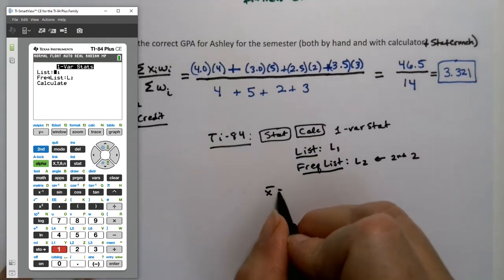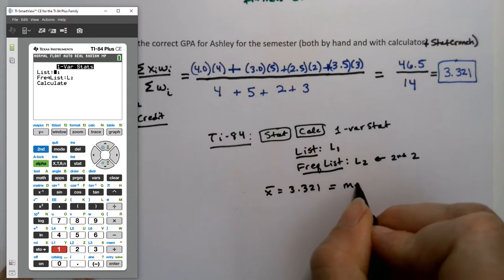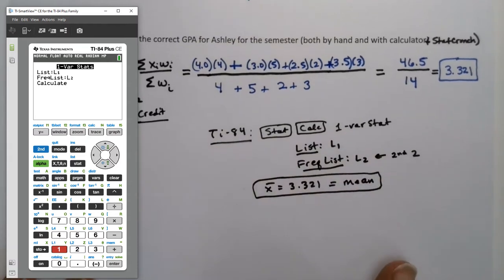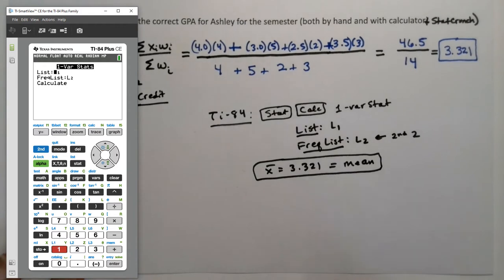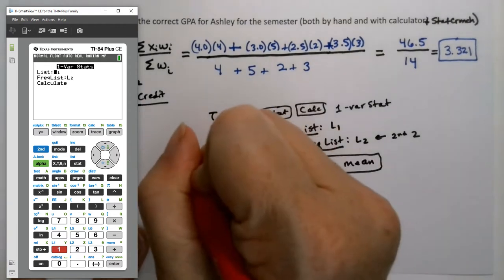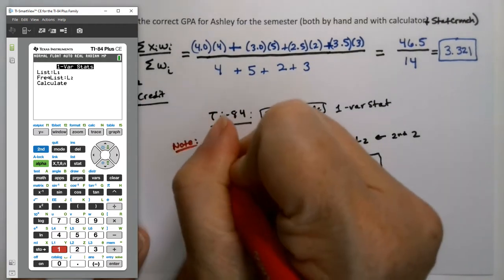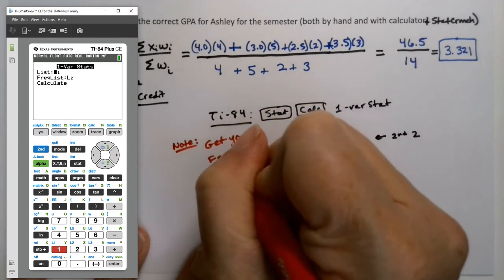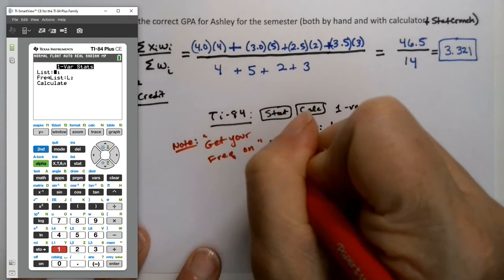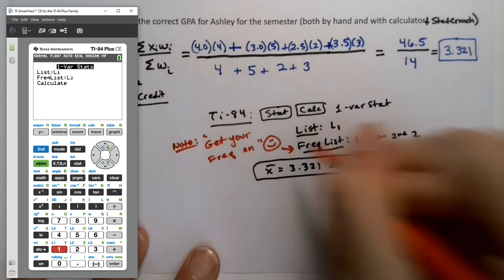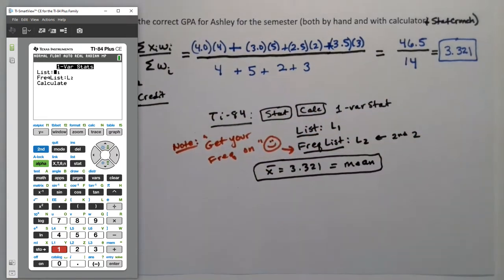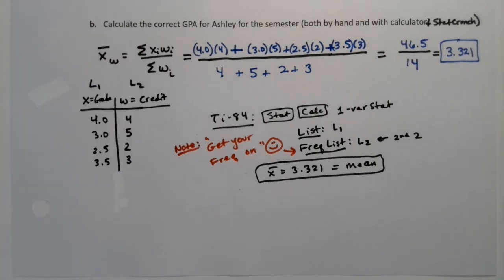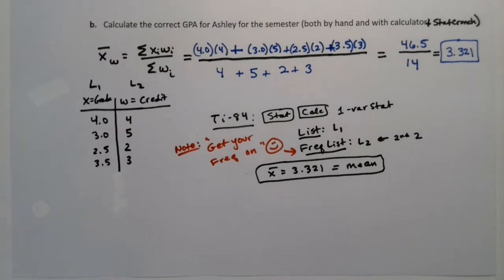When you run it, x bar would be 3.321, which is the mean. Simple as that. I'm going to make a little note: get your freak. By having something in that frequency list, you are getting your freak on, you're turning your frequency list on. I can't help it. I have to use my nerdy math jokes where I can.